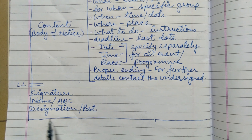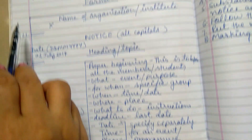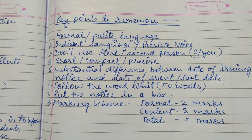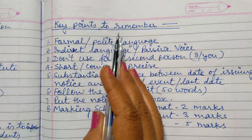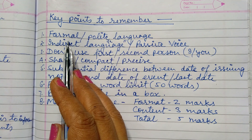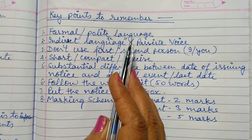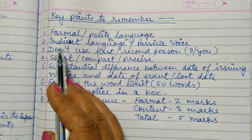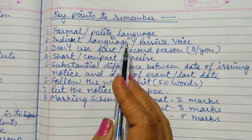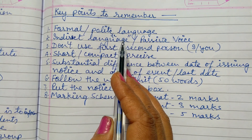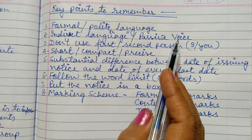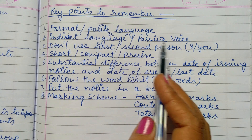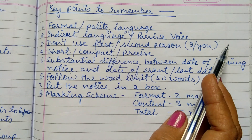Then we will make a box around the notice, which is very important. There are certain key points which we should remember. For writing a notice we should use formal and polite language. We should not use informal phrases like hello, how are you, good morning, thank you, etc. We should use indirect language. We should not make any statement in inverted commas. We should use passive voice as far as possible, for example: 'All the students are hereby informed' or 'All the members are requested to attend the meeting.'